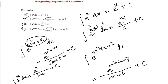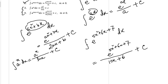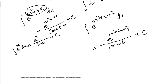Here we did not divide by ln e because ln e equals 1, so you do not need to put ln e. But if the base is not e, you need to divide by ln a. For example, integration of b to the power x is equal to b to the power x divided by ln b, plus c.